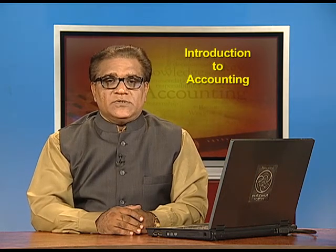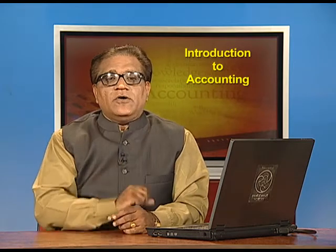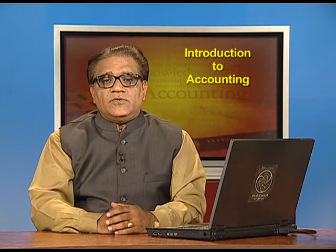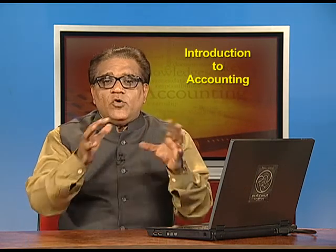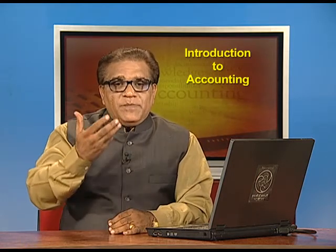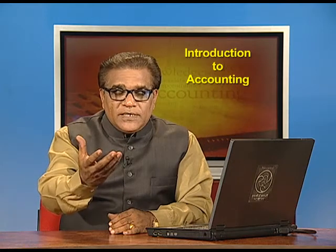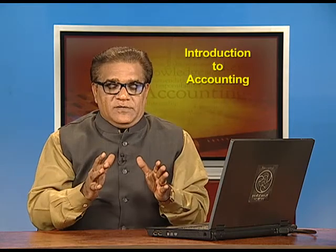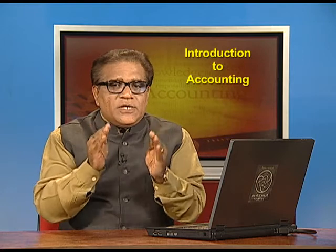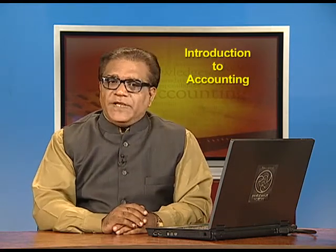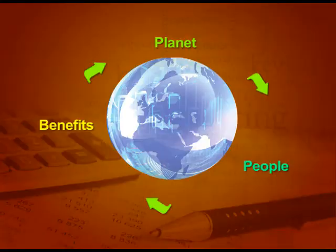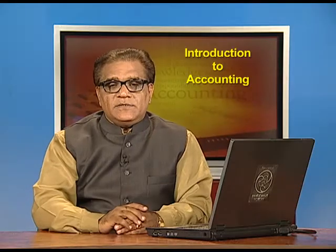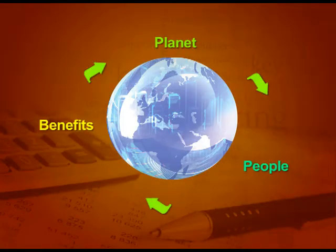Fourth is social responsibility accounting — what we are doing for society, as explained through the CSR point in the Companies Act. Fifth is human resource accounting — what the organization is doing to develop the capabilities of its people. Manpower capabilities should be developed for overall growth. If our people are good, they deliver good results; if they are not capable, overall growth is affected.